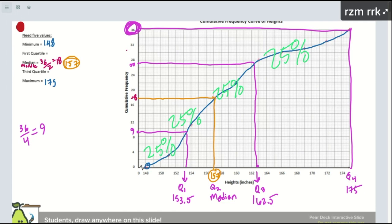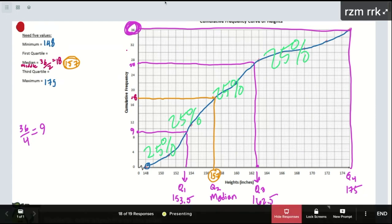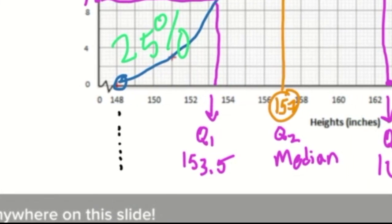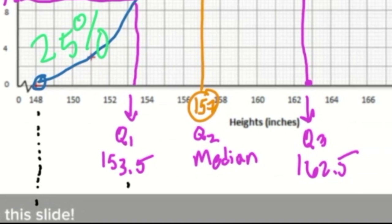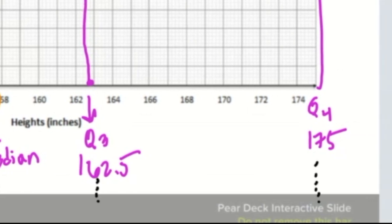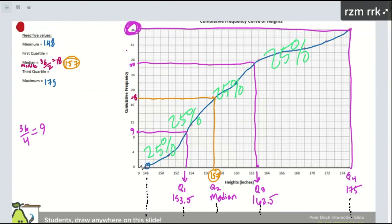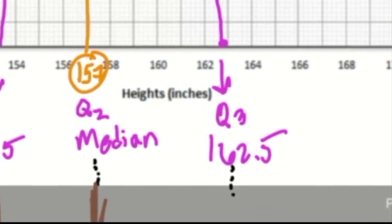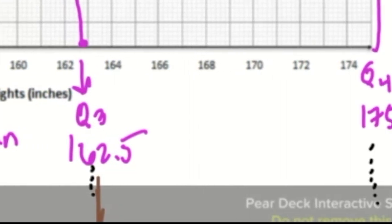So then the last thing is the reason why this is very important is because, remember, we're talking about box and whisker plots? Well, these are all the things we need for our box and whisker plot. So we are going to form our box and whisker plot here. So we have a minimum here. That's our minimum. Quartile one. Our median. Q3. And our maximum.